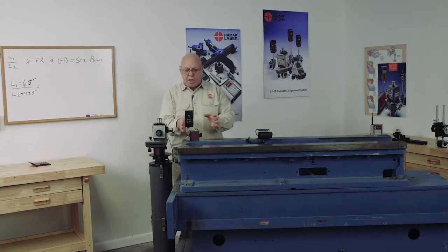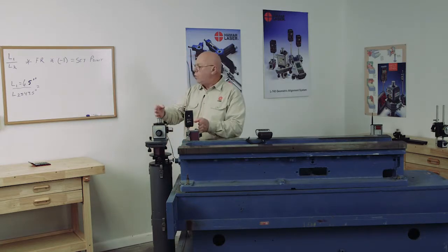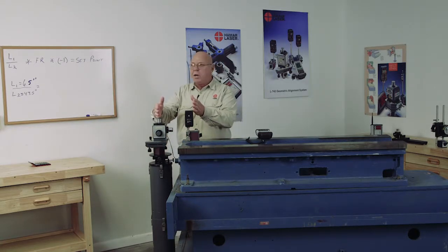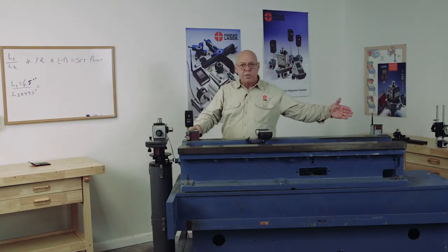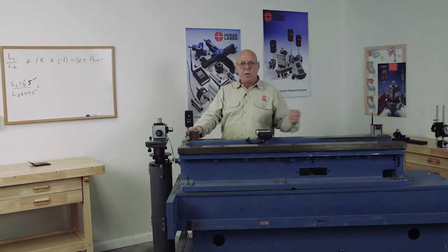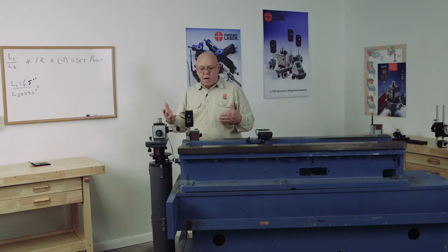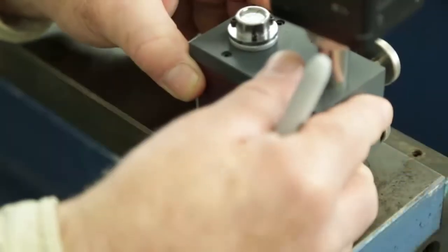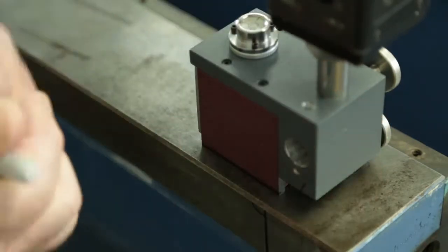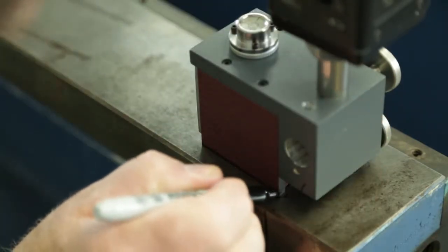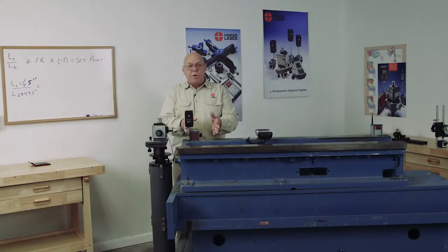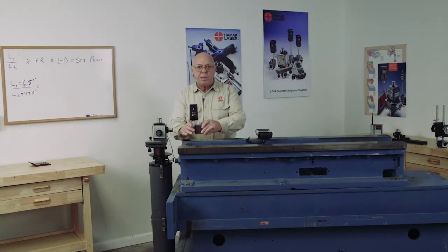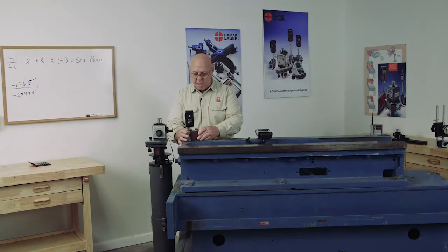Now I've already taken the measurements. I know that my L1 dimension here is 6.5 inches, and I know my L2 dimension is 49.5 inches. So I've taken some of the work out of it. And just like before, wherever I place this target, I'm going to make a footprint. I always want to set it in the same spot so I get good repeatability. And I always want to keep the base facing the same direction.